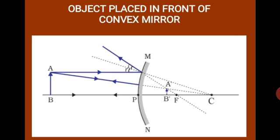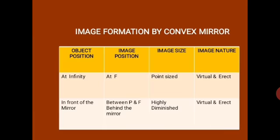There are only these two cases for convex mirror. Let us revise it once. When the object is placed at infinity, the image is formed at focus. It is a point-size image and virtual and erect in nature. When you place the object in front of the mirror anywhere at some distance apart, then the image is formed between P and F which lies behind the mirror. The image size here is highly diminished and it is virtual and erect. These are the two cases for the image formation by convex mirror.